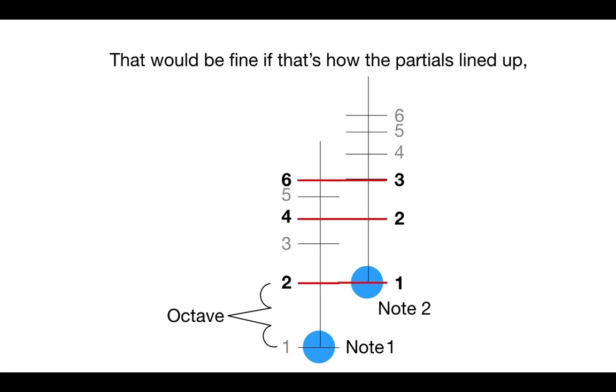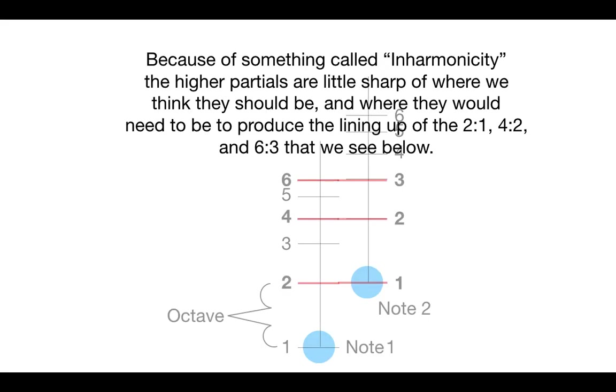That would be fine if that's how the partials lined up, but they don't. Because of something called inharmonicity, the higher partials are a little sharp of where we would think they should be, or where they would need to be to produce the lining up of the 2-1, 4-2, and 6-3 that we see below.